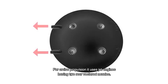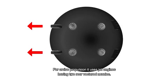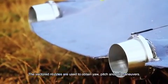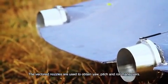For cruise propulsion, it uses jet engines having two rear vectored nozzles. The vectored nozzles are used to obtain yaw, pitch and roll maneuvers.